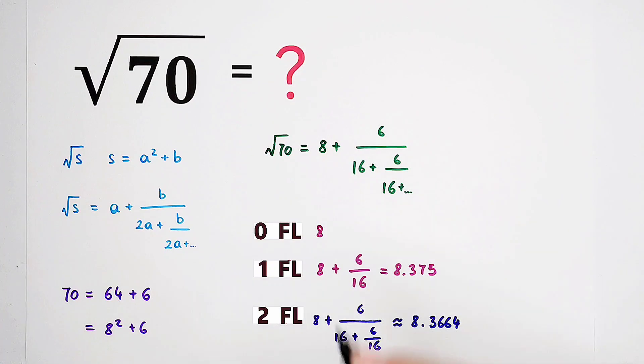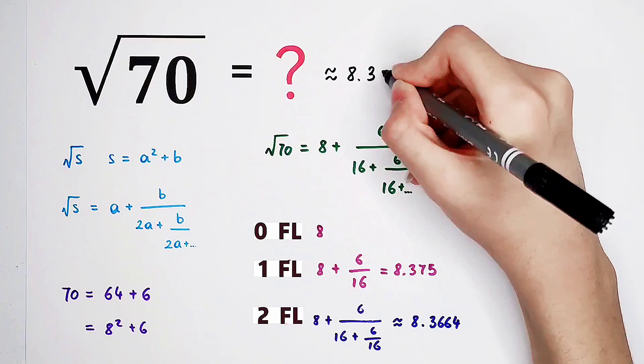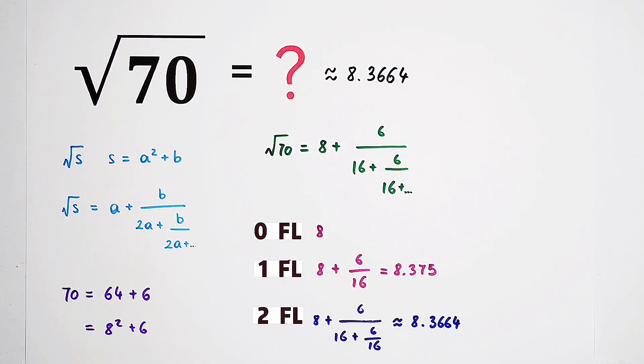So square root of 70 is approximately equal to 8.3666. Of course, you can also take three fractional lines. However, the calculation will be much, much more complicated.